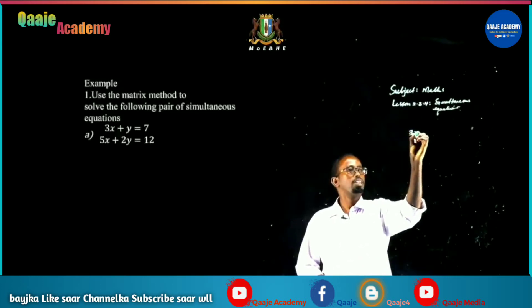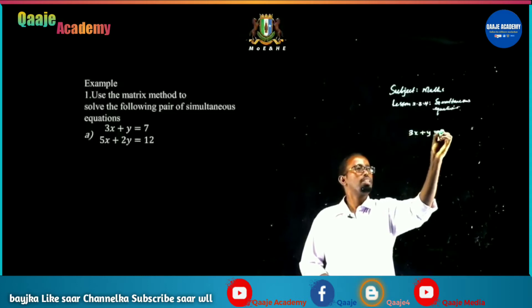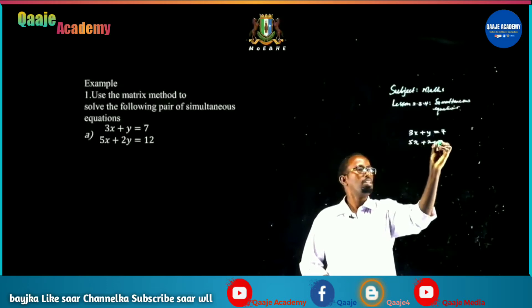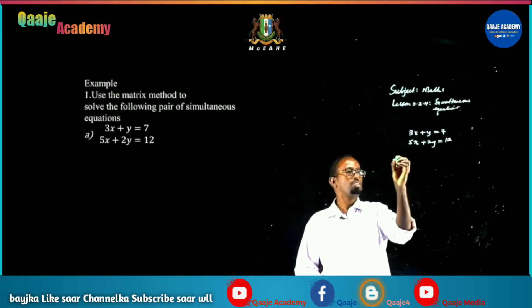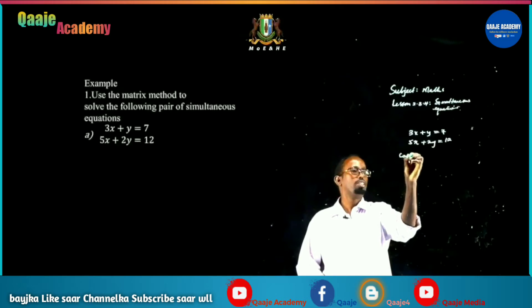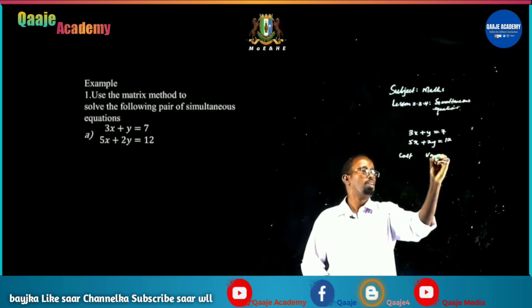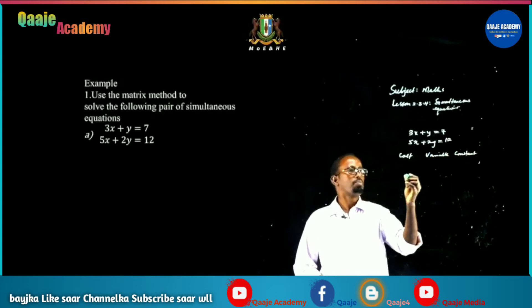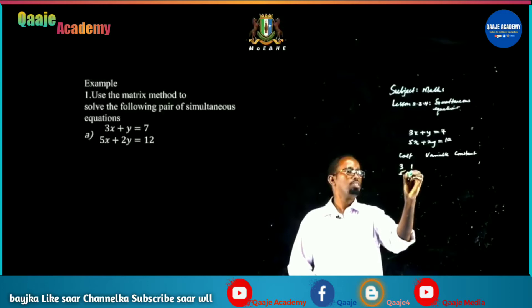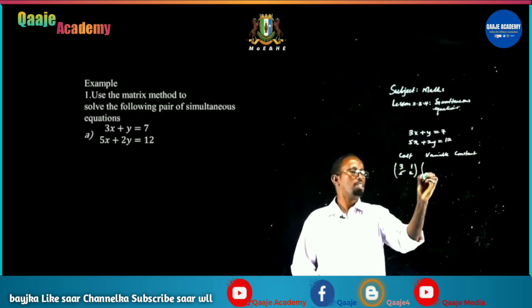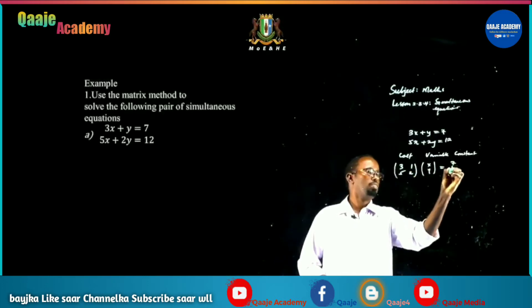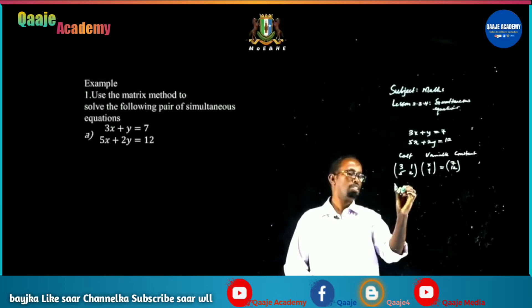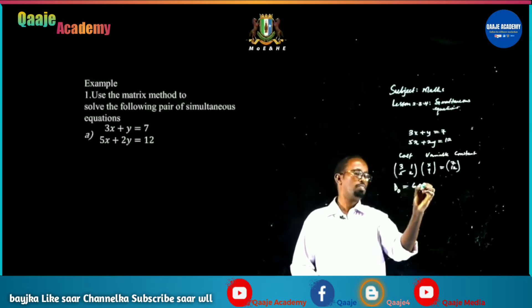For Cramer's Rule, the equations are 3x plus y equals 7 and 5x plus 2y equals 12. We set up coefficients, variable, and constants: [3, 1; 5, 2], [x; y], [7; 12]. The original determinant D equals 6 minus 5, which equals 1.